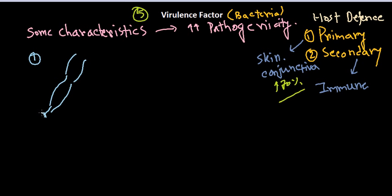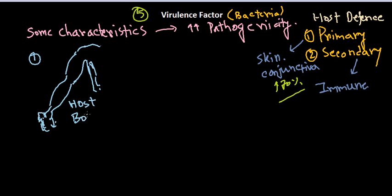Let me draw some pictures here. This is the hand of an individual — this is the host body. The bacteria, represented by the red thing, enters into the host body. This first step is the entry into the host body.